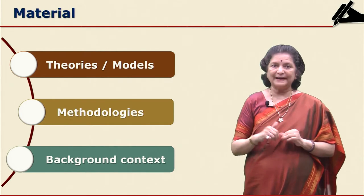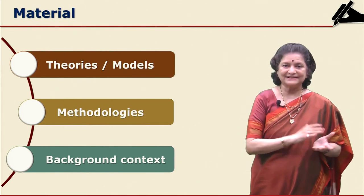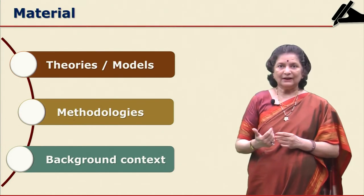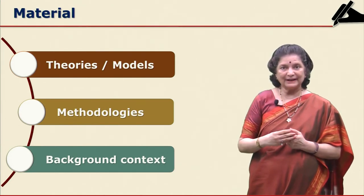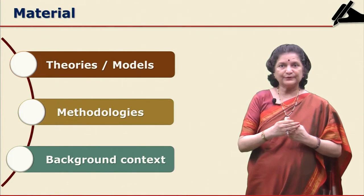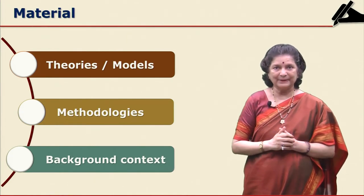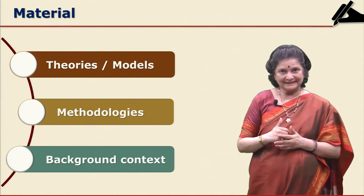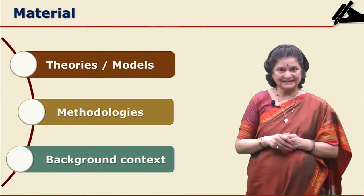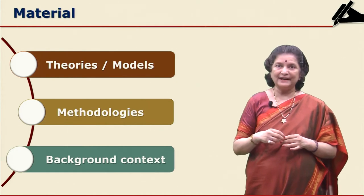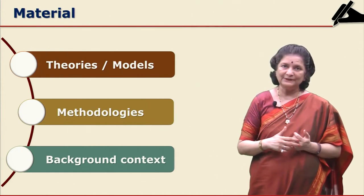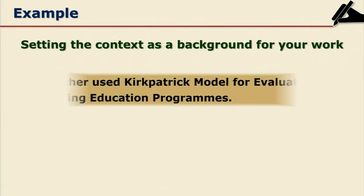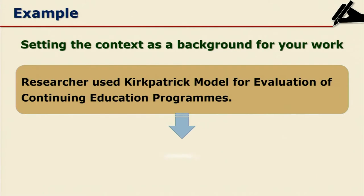This will give you a good background for your work. You should also think about the background context provided by earlier researchers, compare it with what you are going to do, and consider all these theories and models. Instead of just imitating earlier people, think about whether any latest model or theory has come, so that this provides background material for your own literature review.